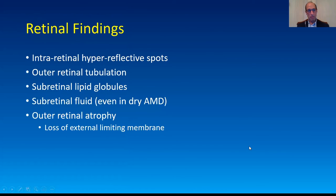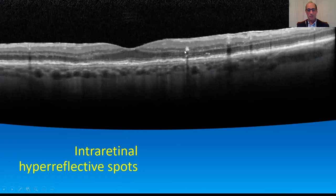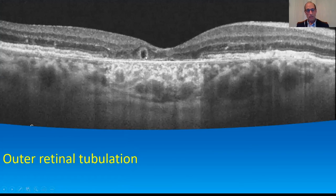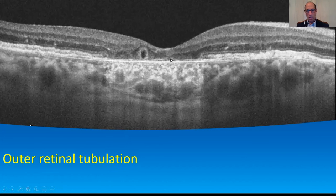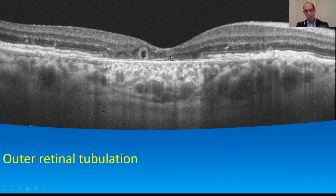Quickly going through retinal findings: this is the intraretinal hyperreflective spot with the pigment right there. Here's an outer retinal tubulation — you get these little circles that are hyperreflective all the way around. They look like a cyst, but they're not. Here's a patient with geographic atrophy and a little bit of outer retinal tubulation. If you follow these with en-face OCTs or sequential OCTs, they run through the retina like tubes.